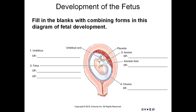Lacto means milk. Nato means birth. Omphilo means umbilicus or navel. Paro or parto means to bear, give birth to, labor or childbirth. And purpuro means childbirth.